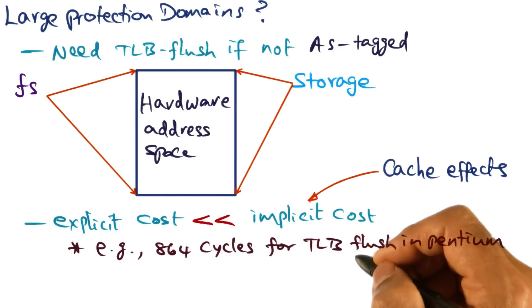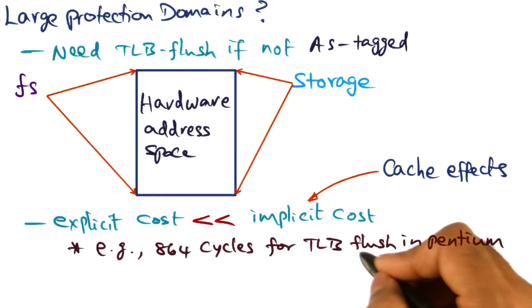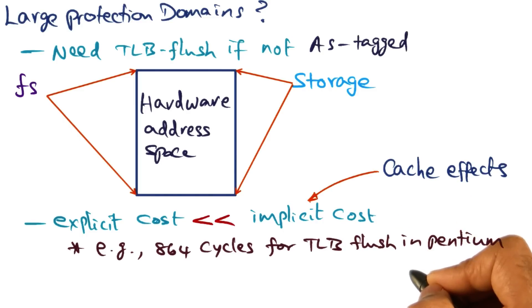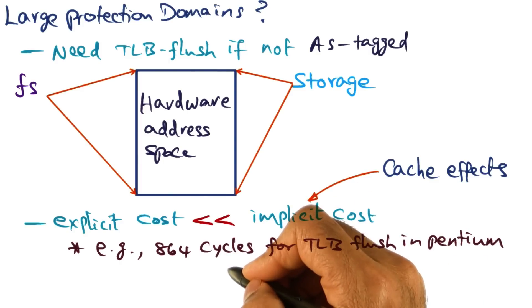For example, Liedtke shows that on the specific architecture in which they implemented L3, which is a Pentium architecture, it had 32 entries for kernel translations and 64 entries for user translations. Even if you want to flush the entire TLB, all the entries in the TLB, it takes 864 cycles to do that.